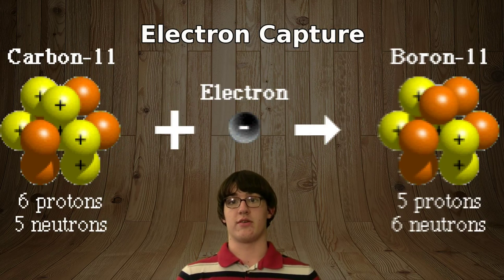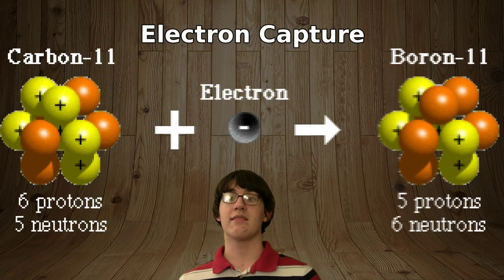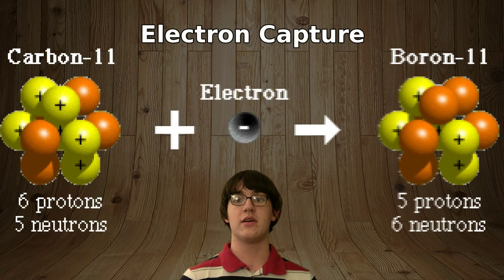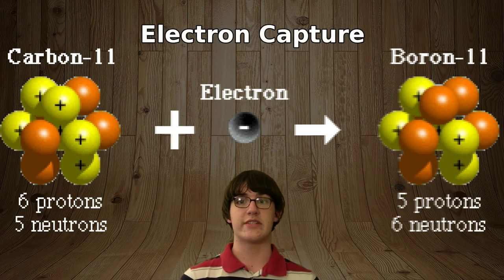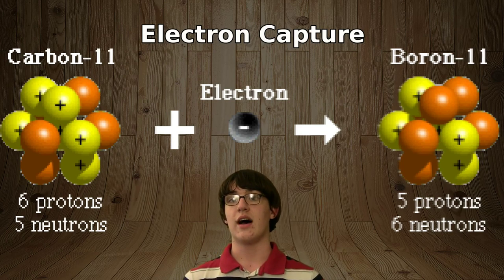Electron capture is when a nucleus is hit by an electron, and that collision forces a proton to turn into a neutron. As a result of this transmutation, an X-ray photon is made and released.